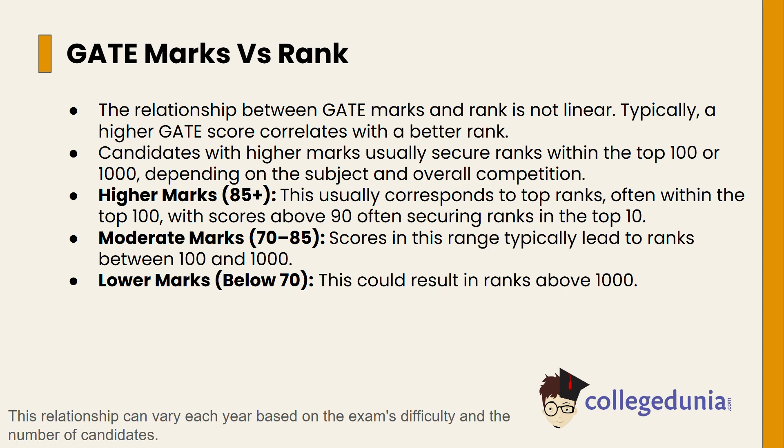Higher marks such as 85 or above usually correspond to top ranks, often within the top 100, with scores above 90 often securing ranks in the top 10. Moderate marks in the range of 70 to 85 typically lead to ranks between 100 and 1000. Lower marks below 70 could result in ranks above 1000, which may vary with exam difficulty and number of candidates.